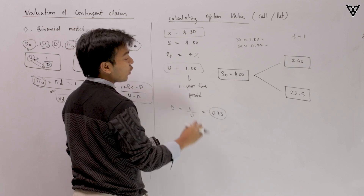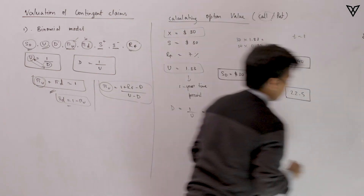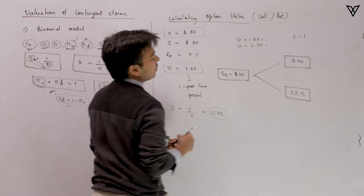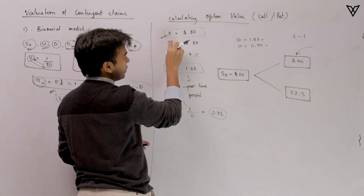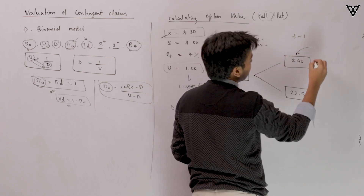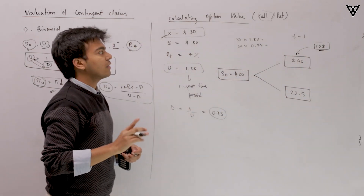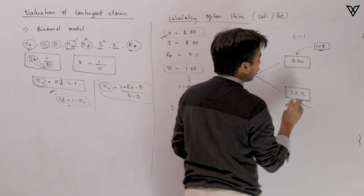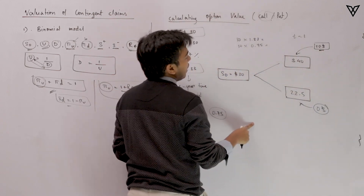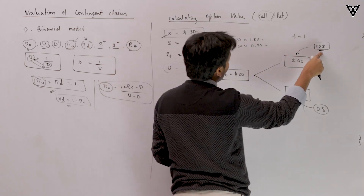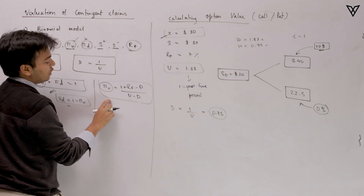Now we need to figure out the value of the call option. When the stock price has touched $40 and the exercise price is $30, the payoff for the long call party is $40 − $30 = $10. On the downside, since the stock price of $22.50 is below the exercise price of $30, the holder would not exercise, so the payoff is $0. Now we need the probabilities to calculate expected payoffs.